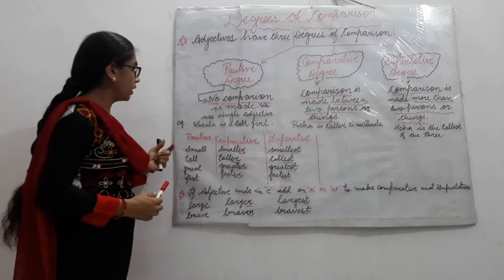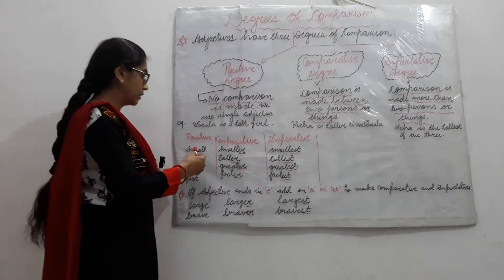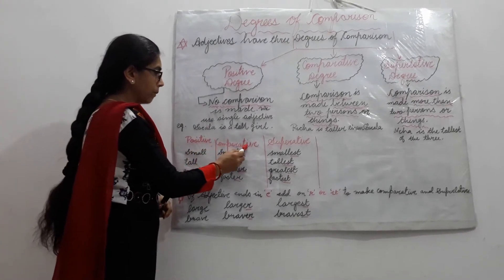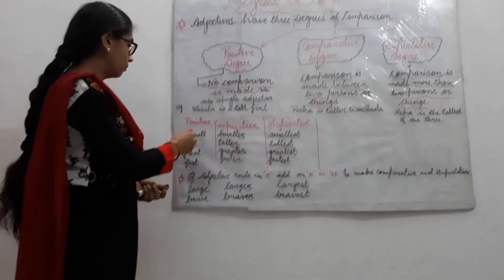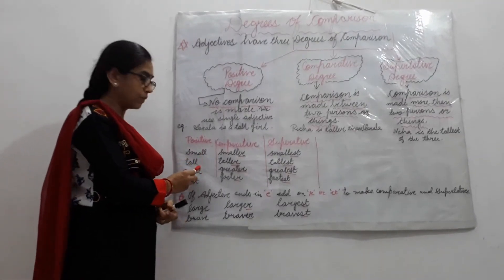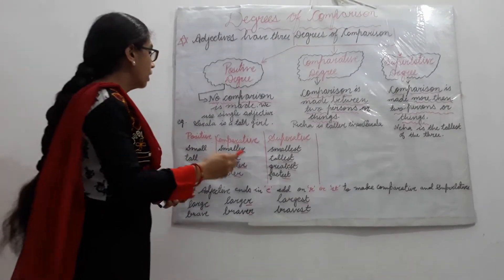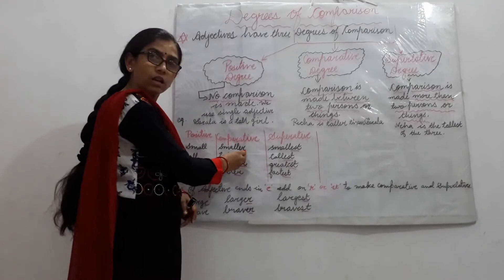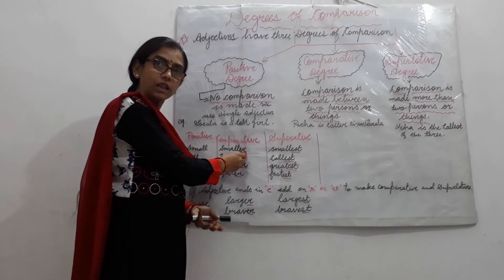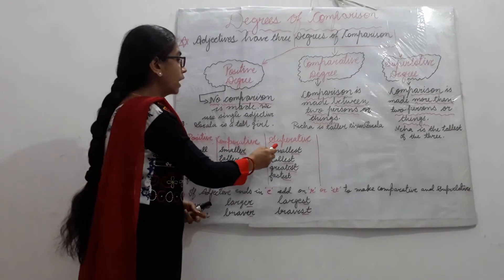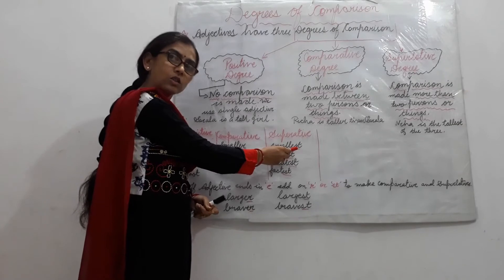So, we use three degrees of comparison to make comparison: positive, comparative, superlative. In positive degree, we use the single adjective. In comparative degree, mostly we use -er in the adjective. And in superlative, we use -est to make it superlative.